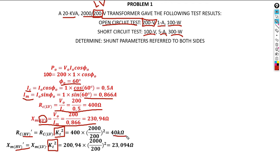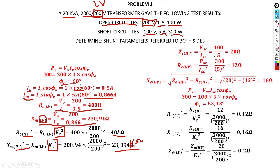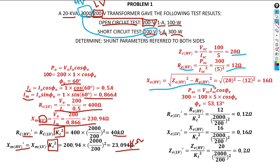After obtaining Rc and Xm referred to the primary — which should be in kilo-ohms — we move on to the short circuit test to determine the equivalent circuit. Since the short circuit test is performed on the higher side, we calculate Zeq, Req on the high side, then apply the Pythagorean theorem to find Xeq, and determine the power factor of the transformer.